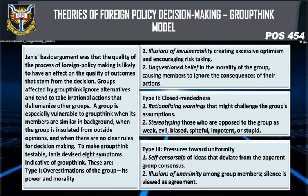Type two — close-mindedness — includes: rationalizing warnings that might challenge the group's assumptions; and stereotyping those who are opposed to the group as weak, evil, biased, spiteful, impotent, or stupid. Type three — pressures toward uniformity — includes: self-censorship of ideas that deviate from the apparent group consensus.